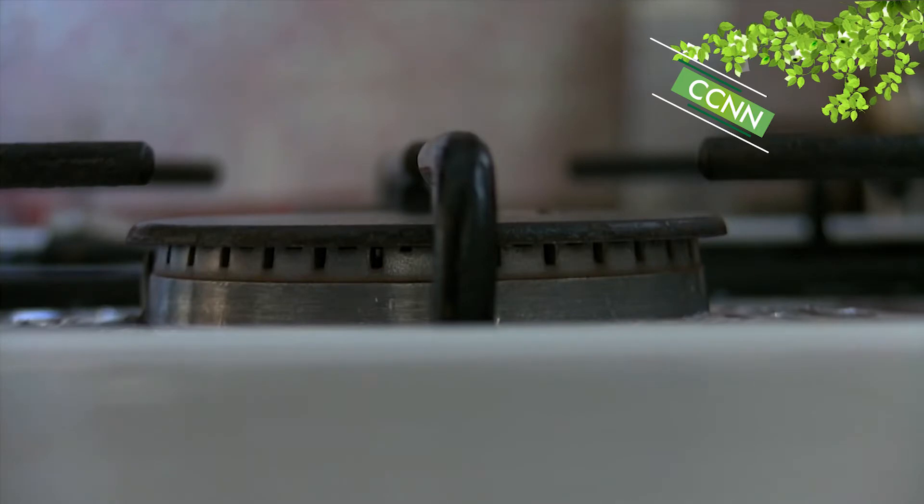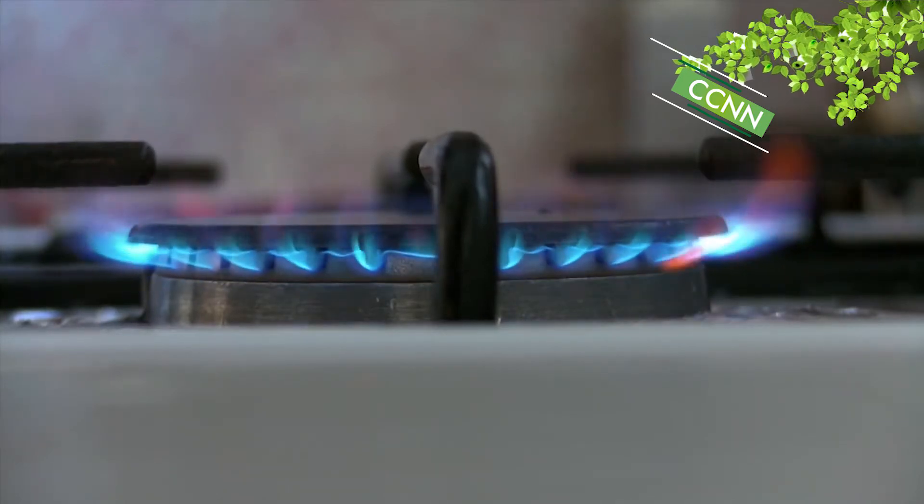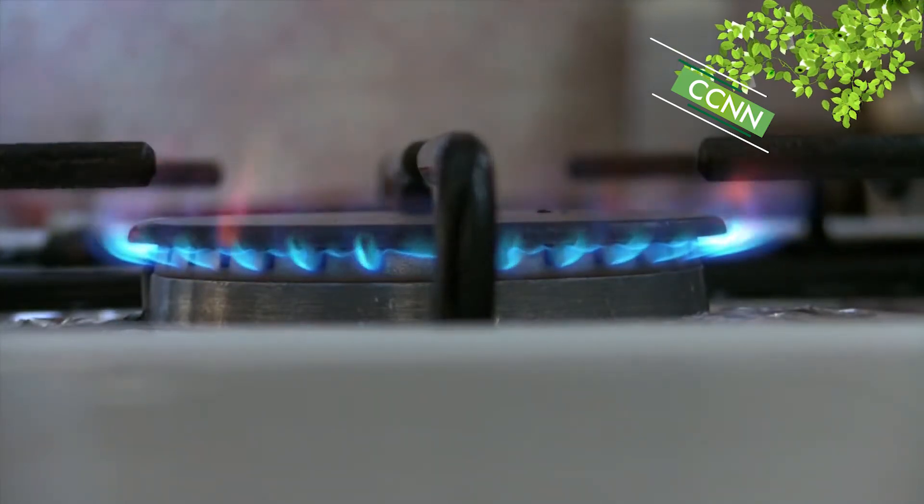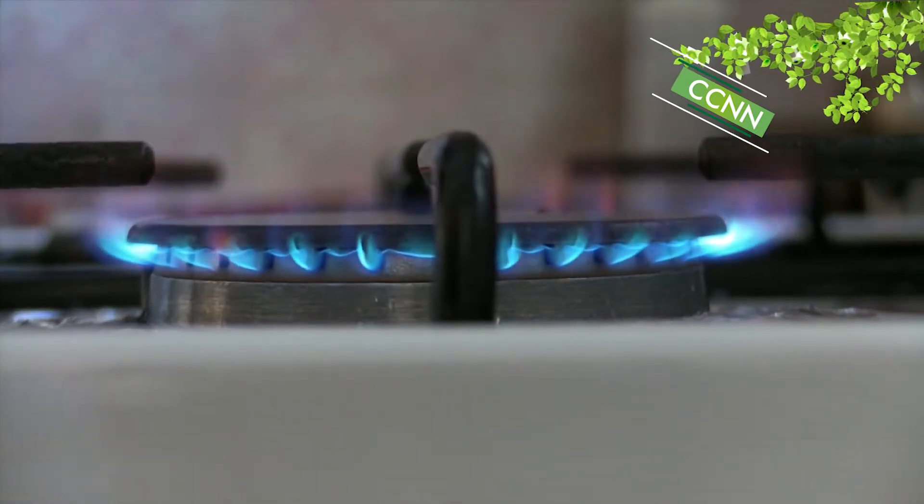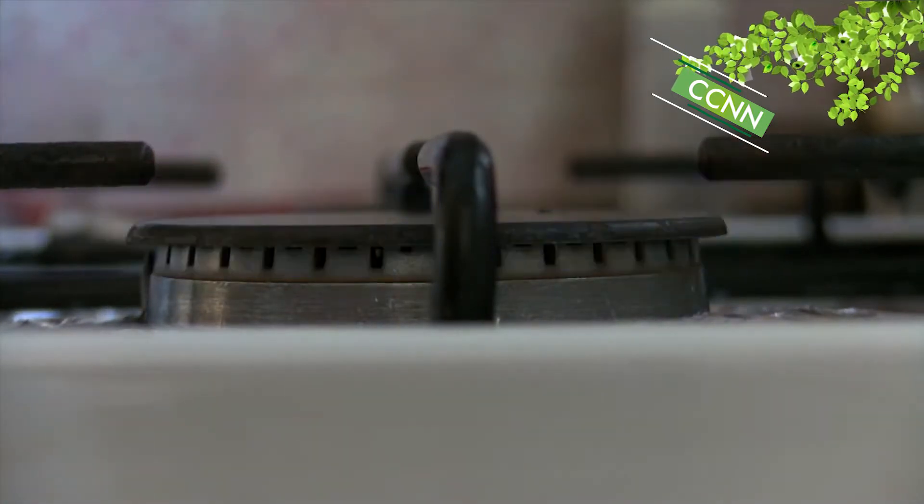An open system can exchange energy and material with its environment. For example, the stove is an open system because it can lose heat and water vapor to the air.